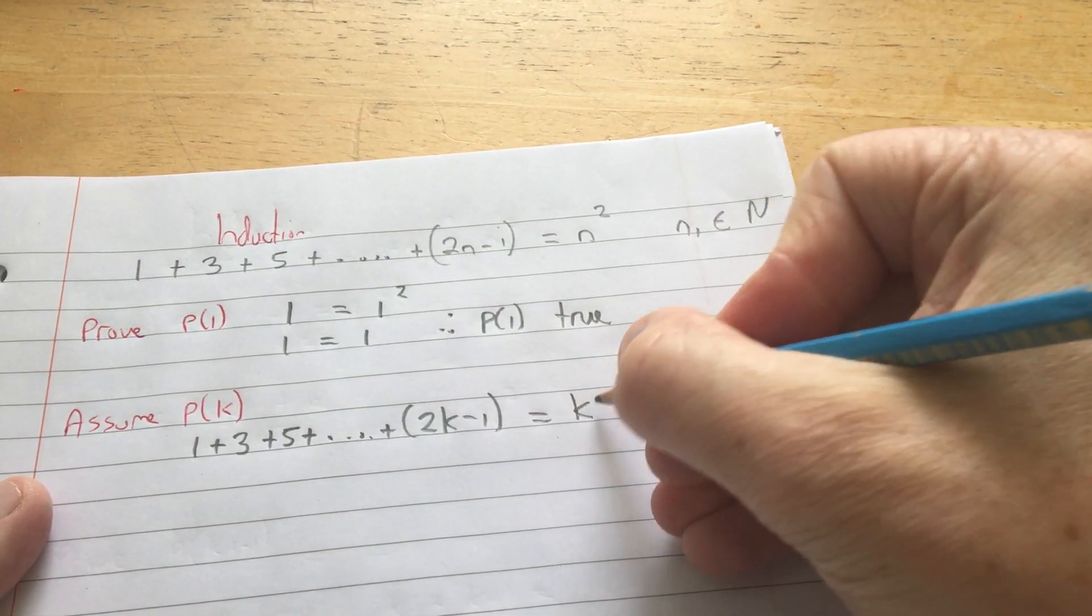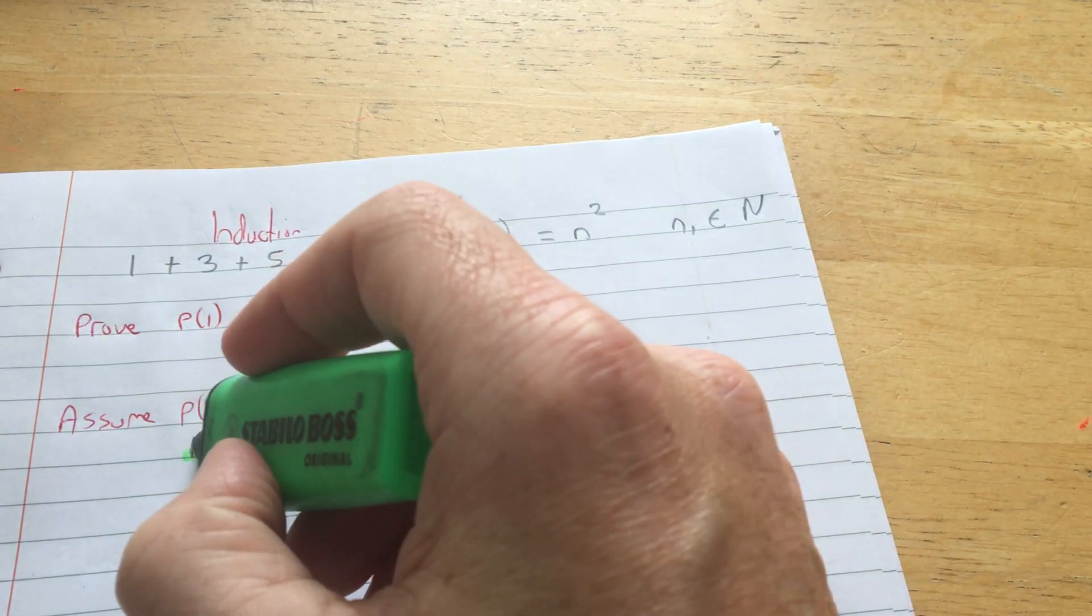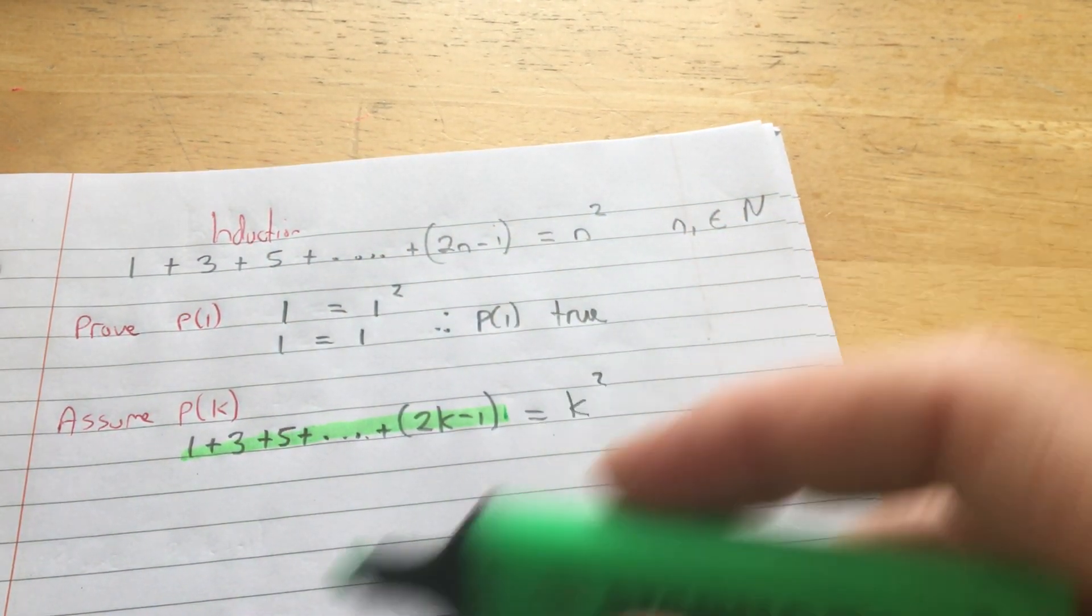And that's equal to k squared. Now, look at this. You're going to look out for this expression again, and wherever you see it, you're going to replace it with k squared.